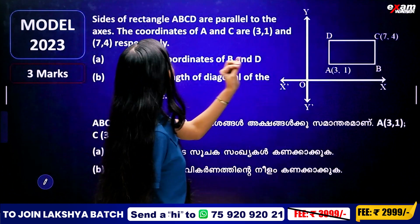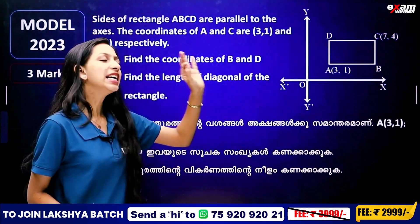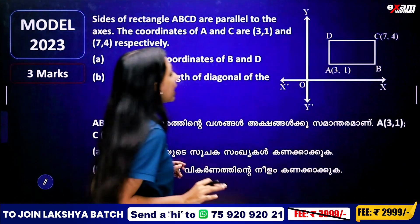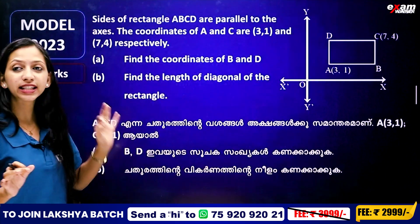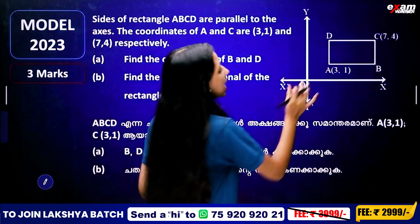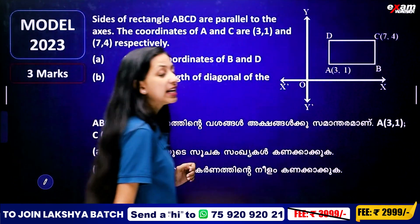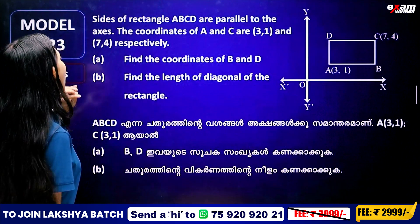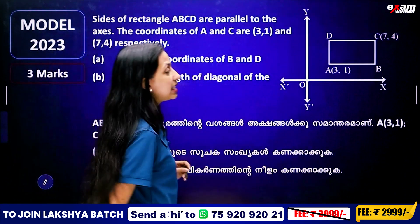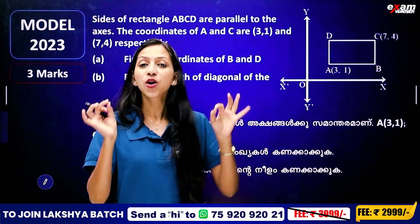What is the rectangle? Rectangle ABCD has two given coordinates — A and C. The A coordinate is (3, 1) and the C coordinate is (7, 4). Find the coordinates of B and D.